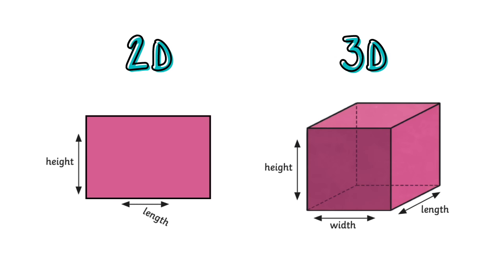Furthermore, a 2D shape has only two measurements, length and height. A 3D shape has three measurements, length, height, and depth or width.